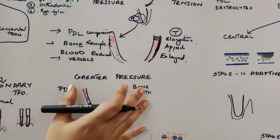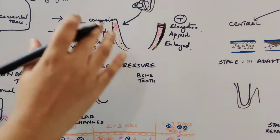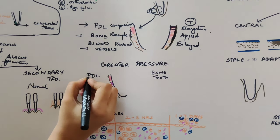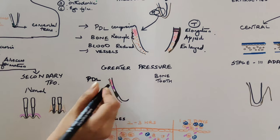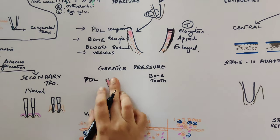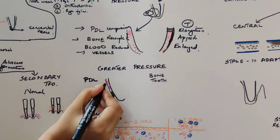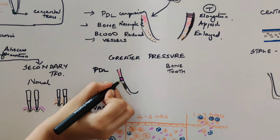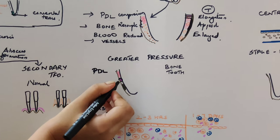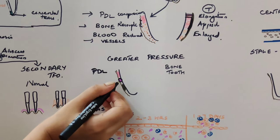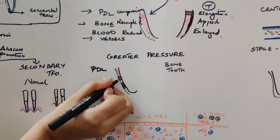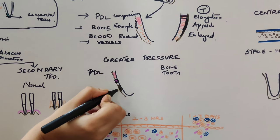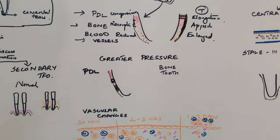Under greater pressure, there is compression of the periodontal ligament fibers followed by formation of an area of hyalinization. This causes connective tissue cells and fibroblasts in the periodontal ligament to undergo necrosis. In bone, resorption occurs, and tooth resorption has also been observed.